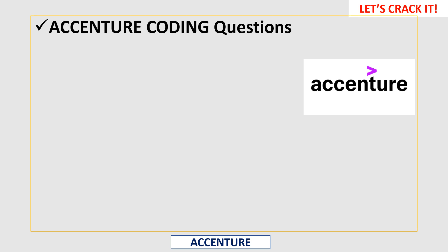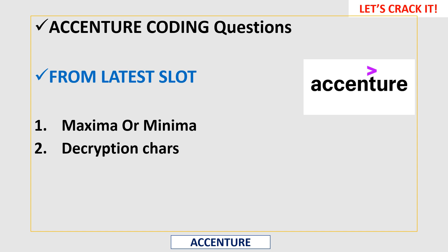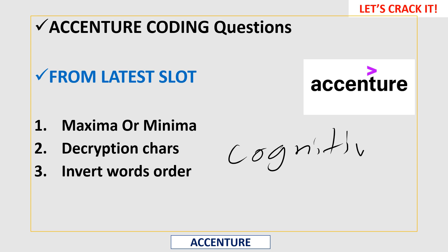In this session we are going to solve at least three coding questions which were asked in the latest Accenture slots: maxima or minima, code decryption of characters, and inverting words. The coding round is conducted for those who cleared the cognitive round by Accenture, which is 90 minutes with 90 questions. If you clear that, within five minutes you will receive the link to attend the coding assessment.